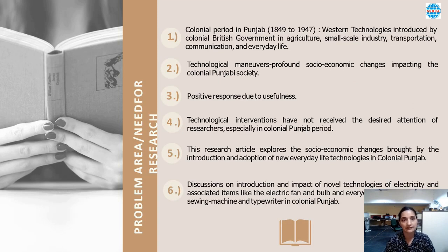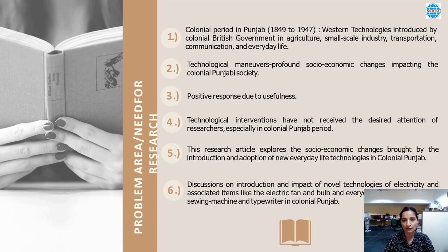First, I would like to state the reason for choosing this topic and the need for this research. The province of Punjab in British India was annexed in 1849 and ruled by the British Indian government from 1849 to 1947 when India gained freedom. This was the period during which Western technologies in agriculture, small-scale industry, transportation, communication and everyday life were introduced. Both in urban and rural areas, the life of the average person was impacted by the arrival of novel and modern technologies. The objective of this paper is to discuss the impact of electricity and associated items like the electric fan and bulb, and everyday machines of bicycle, sewing machine and typewriter on colonial Punjabi society. Since technological interventions impacting society have not received the desired attention of researchers, I have taken up this study.